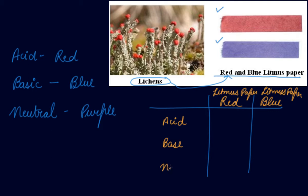When testing an acidic solution, if your red litmus paper stays red, it is acidic. Your blue litmus paper turns red, which also confirms it is acidic.